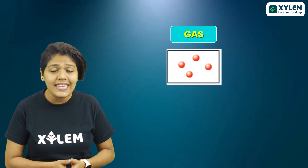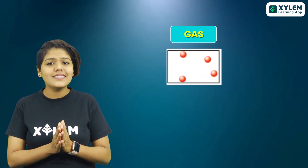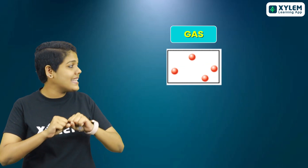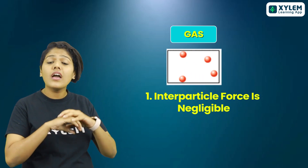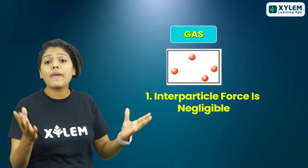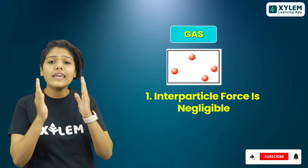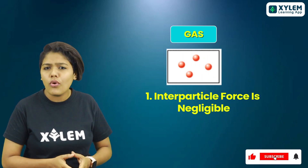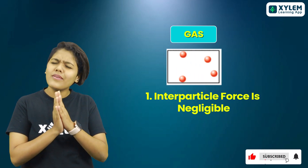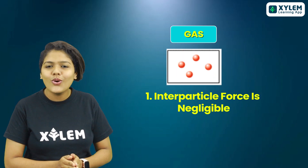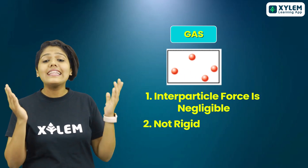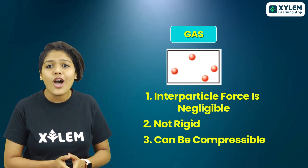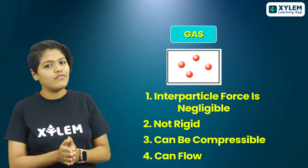Next, we are moving to the third state — the gaseous state. In gases, the particles are apart and have a great space between them. Therefore, the interparticle force is very, very less. They are not rigid, they can be compressible, and they can also flow.